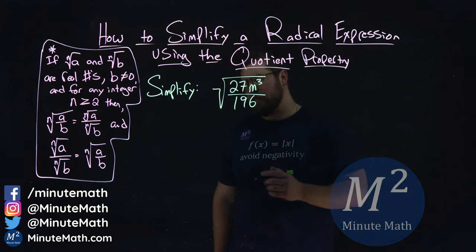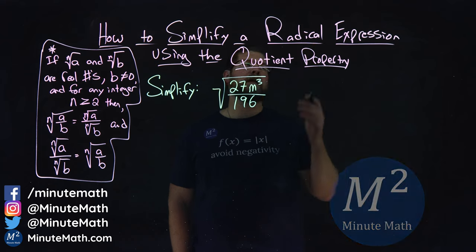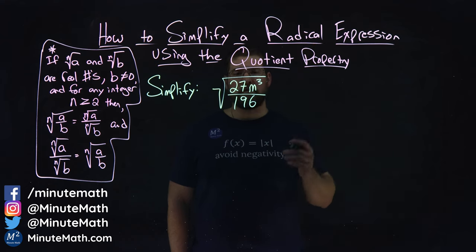Hi, I'm Sean Gannon and this is Minute Math. Today we're learning about how to simplify a radical expression using the quotient property.